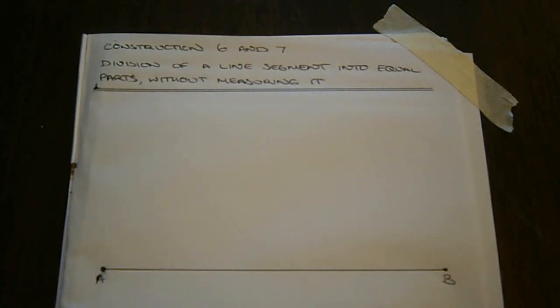Construction 6 and 7. These involve the division of a line segment into equal parts without measuring it.